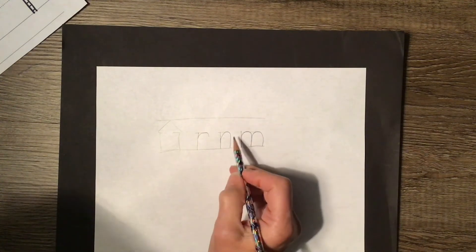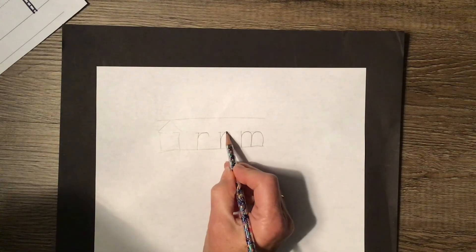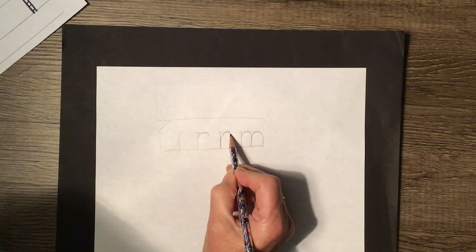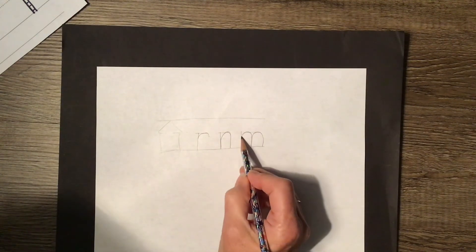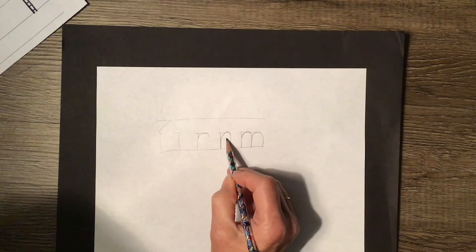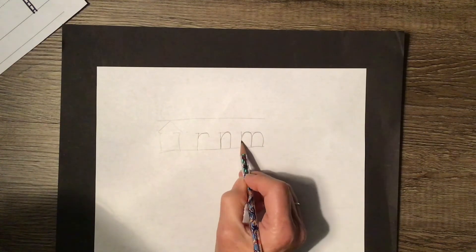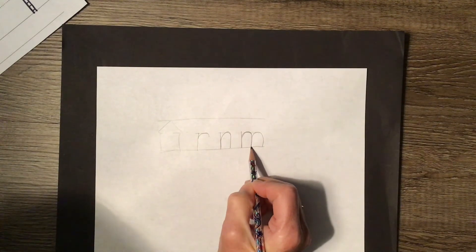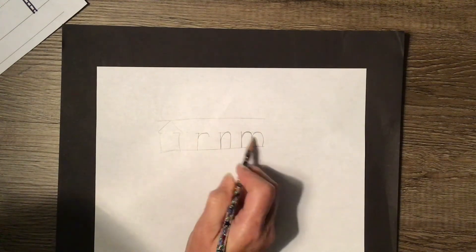And the other thing I like to look for is here there's an R hidden right there. There's an R hiding in the M. There's also an N hiding in the M. So it helps to think about those letters that are made with the same kind of strokes.